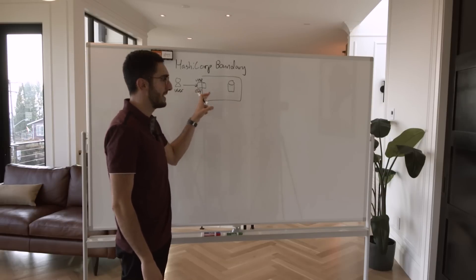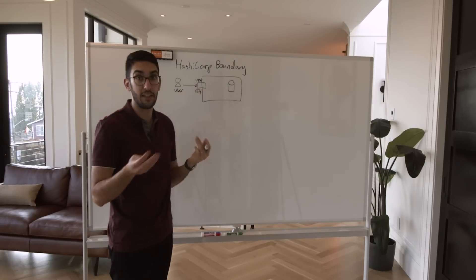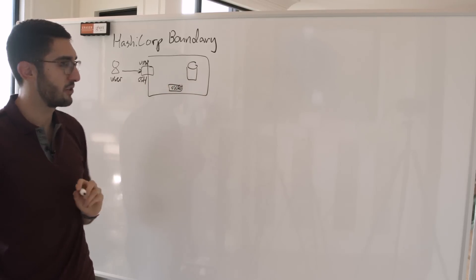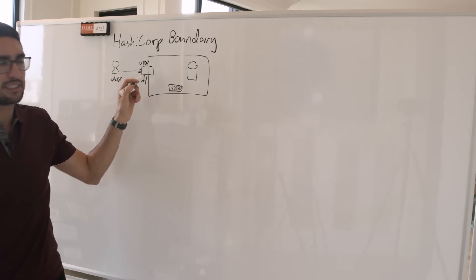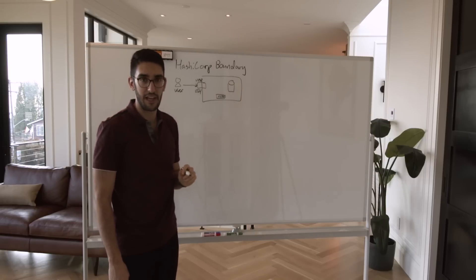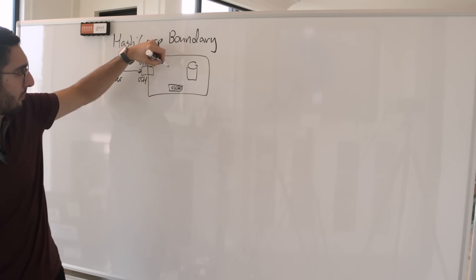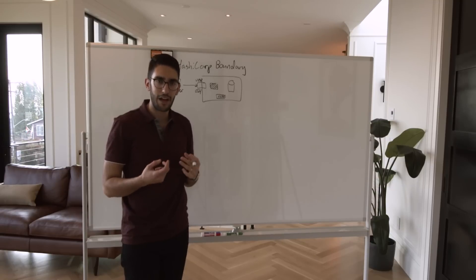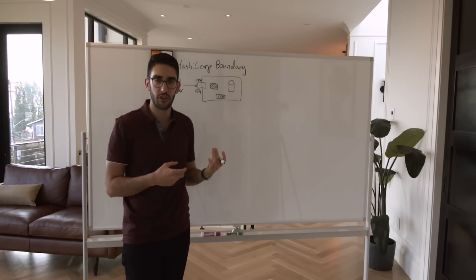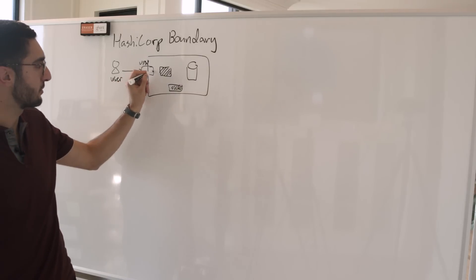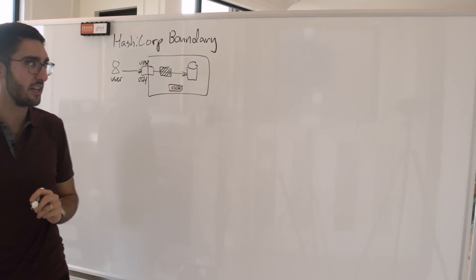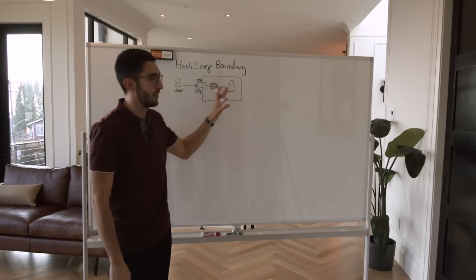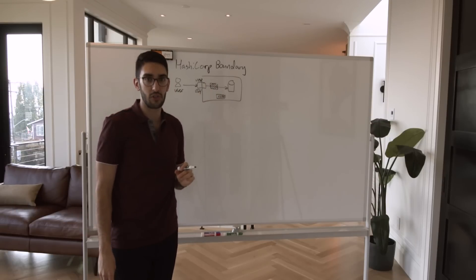Now the problem is we don't necessarily want this user to be able to connect to any system. So we might have some systems — let's say a super secret system that nobody should have access to — we don't want you to be able to connect to the VPN and then just willy-nilly connect to everything inside this private network. So in practice, what we probably also do is have some form of a firewall that restricts where traffic originating from the VPN or the SSH bastion host can go. Once the user connects all the way through to the database, they also need a database username and password to connect to it.